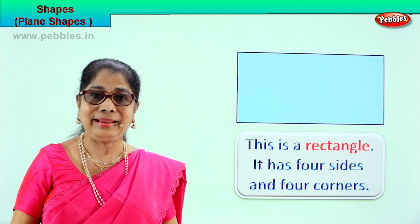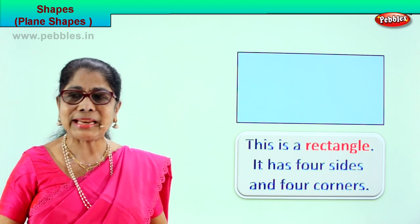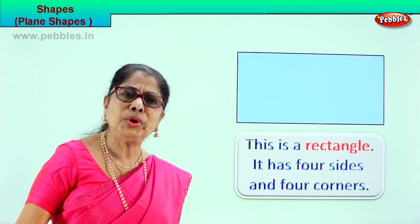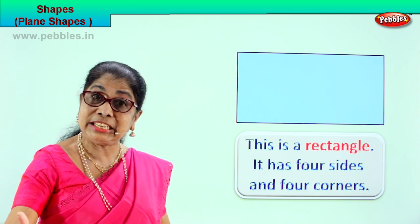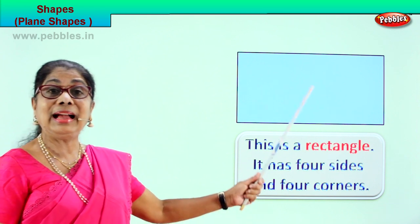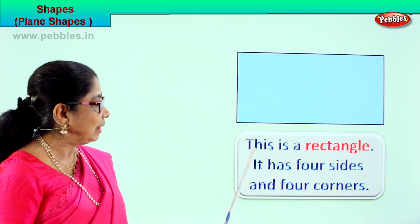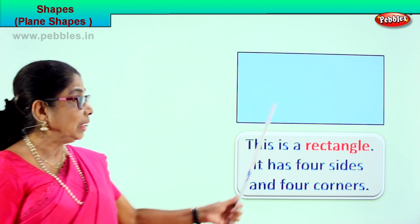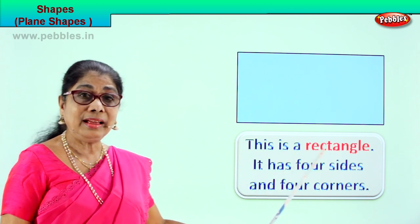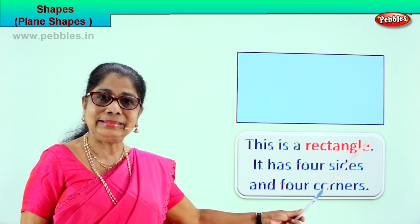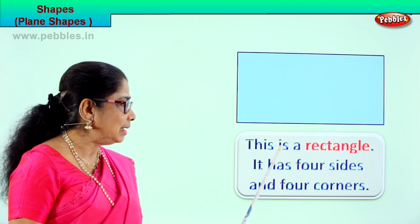At home, where do you see a rectangle? Your table, your slate, your room, your book, and what not. So today we are going to observe and learn about the shape. This is a rectangle. Begin with the capital letter, full stop. What is this? This is a rectangle.